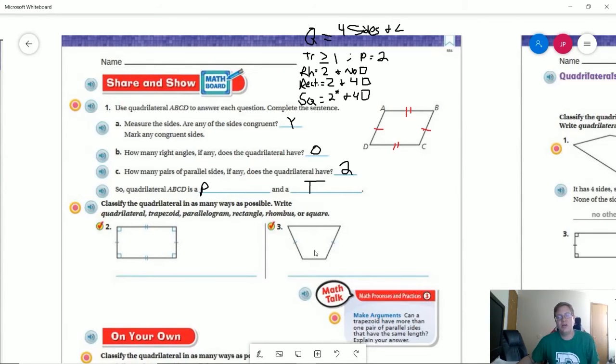Number three, we're going to have a quadrilateral that is a trapezoid and that is the only two ways that we can classify that. We don't have two matching pairs of sides to be able to count as a parallelogram, rhombus, rectangle or square.